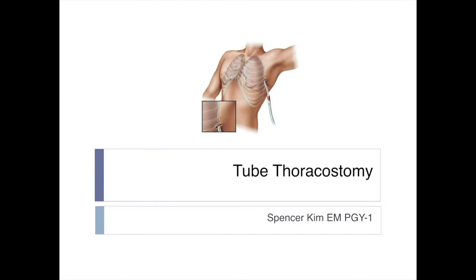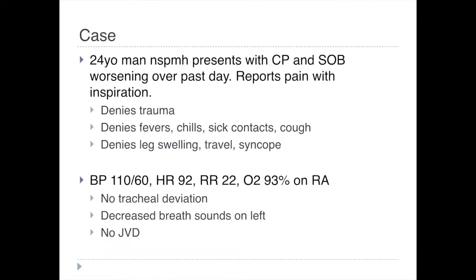Alright, we're ready to go. If you haven't met me already, my name is Spencer. I'm one of the EM1s, and I'm going to do a clinical trial today on tube thoracostomy. Let's say we're in CCT and we have this patient: a 24-year-old man coming in with chest pain and shortness of breath.